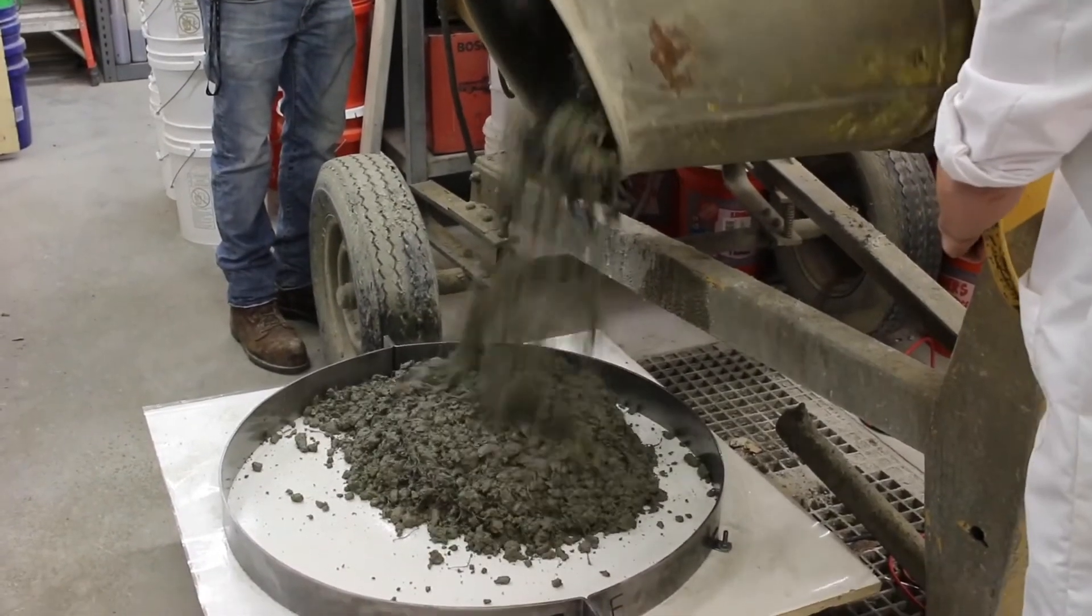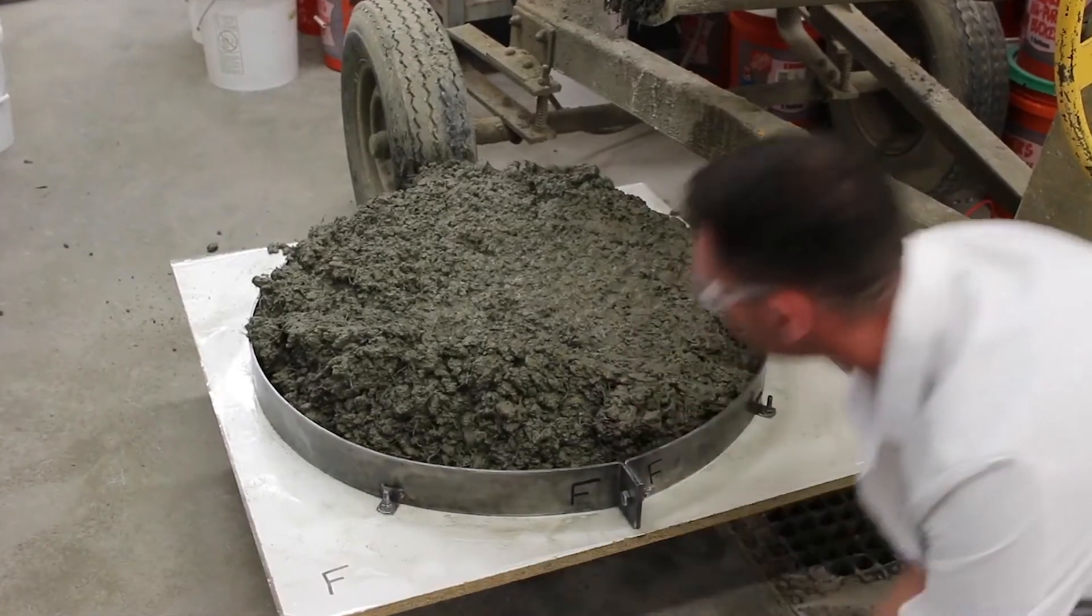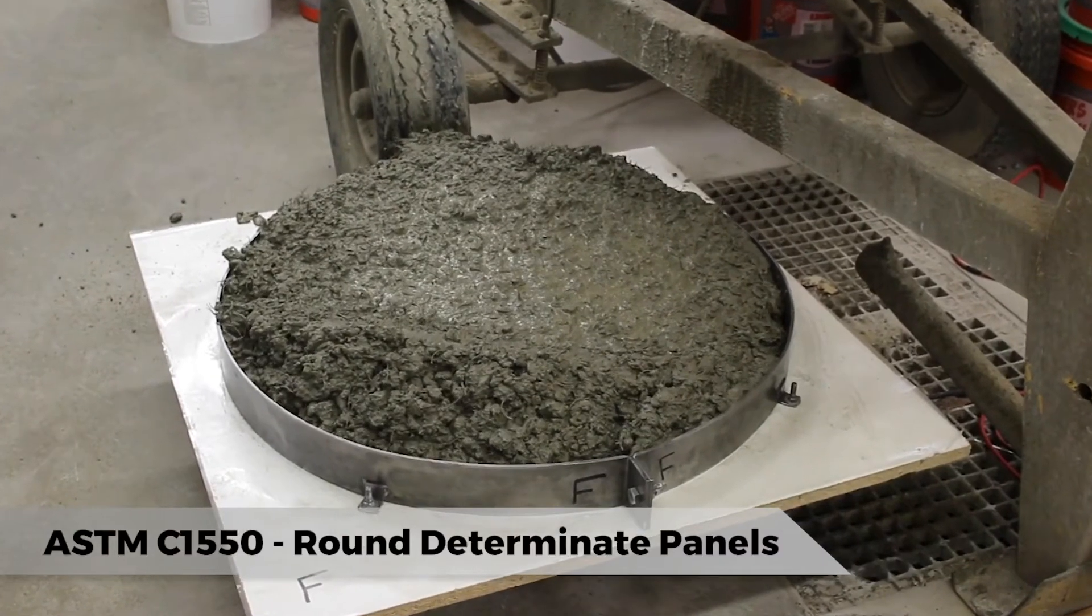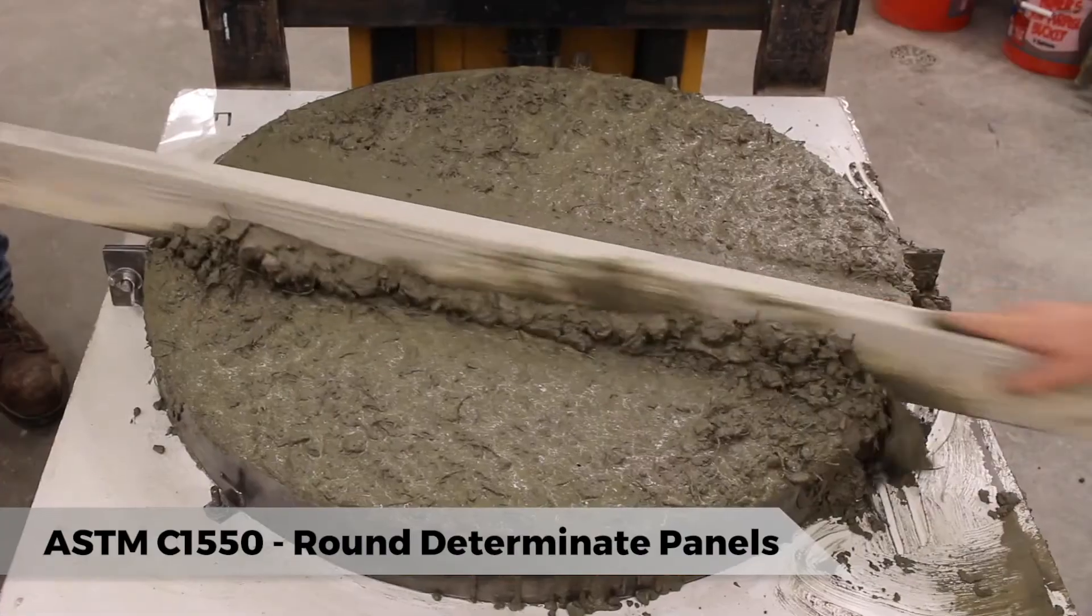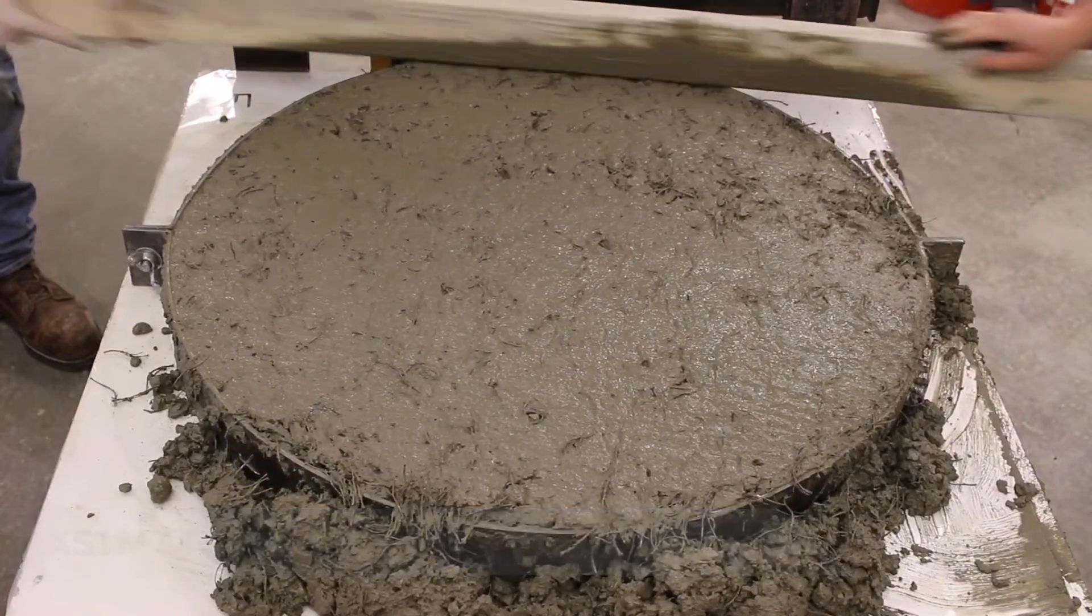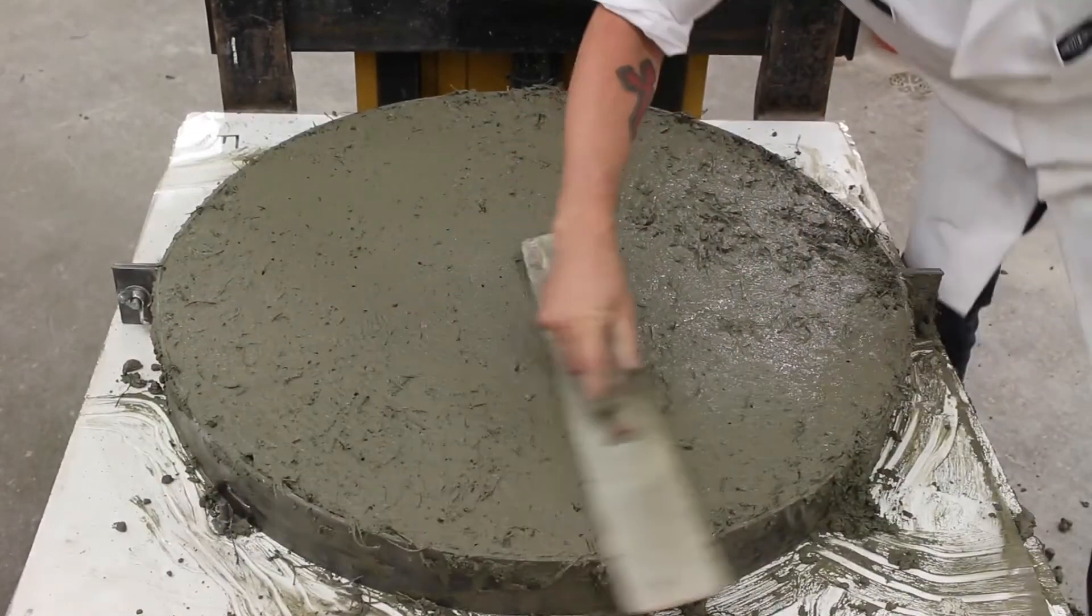ASTM C1550 is a test conducted on large panels and typically used in the shotcrete and underground industry. This test must also be performed under controlled mixing and placing conditions and tested using similar equipment.